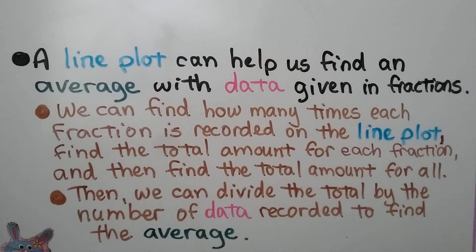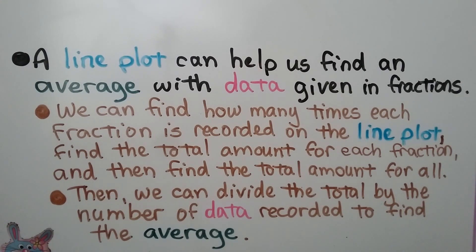A line plot can help us find an average with data given in fractions. We can find how many times each fraction is recorded on the line plot, find the total amount for each fraction, then find the total amount for all. Then we divide the total by the number of data recorded to find the average. Let's see how this works.